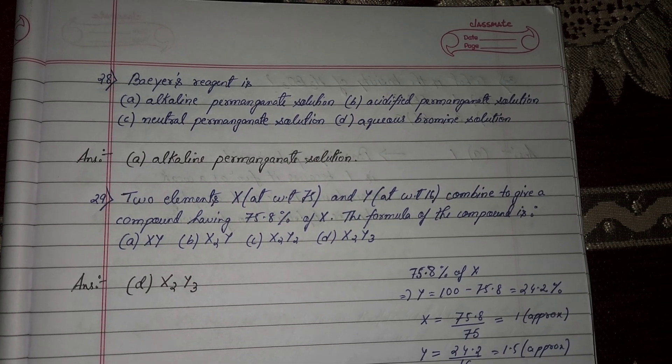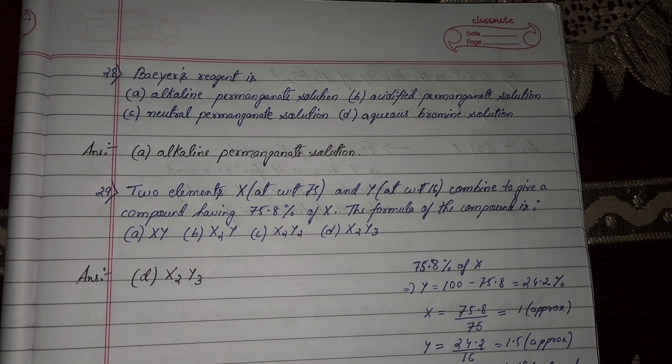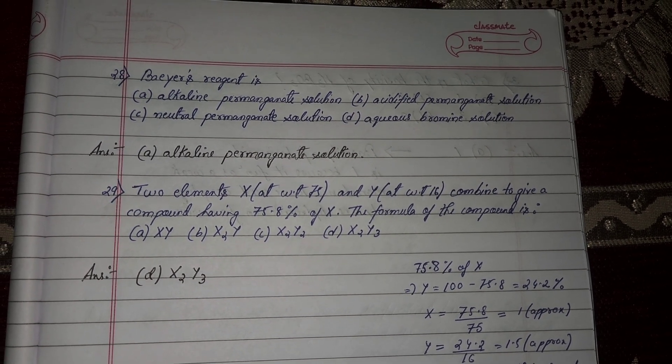Next question number 28, Baeyer's reagent is option number A, alkaline potassium permanganate solution.